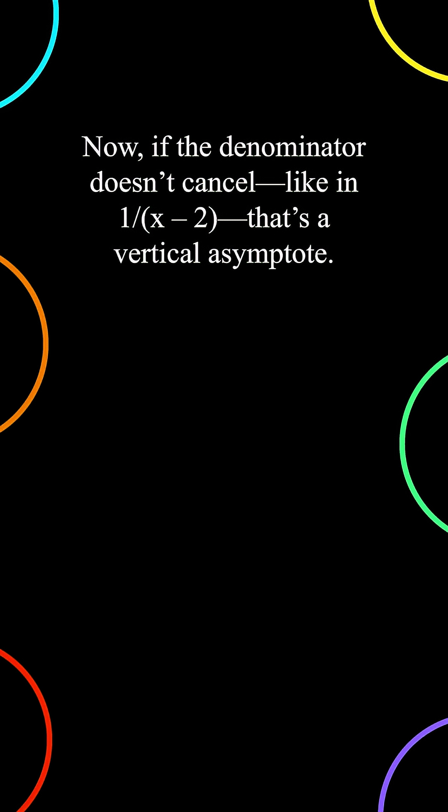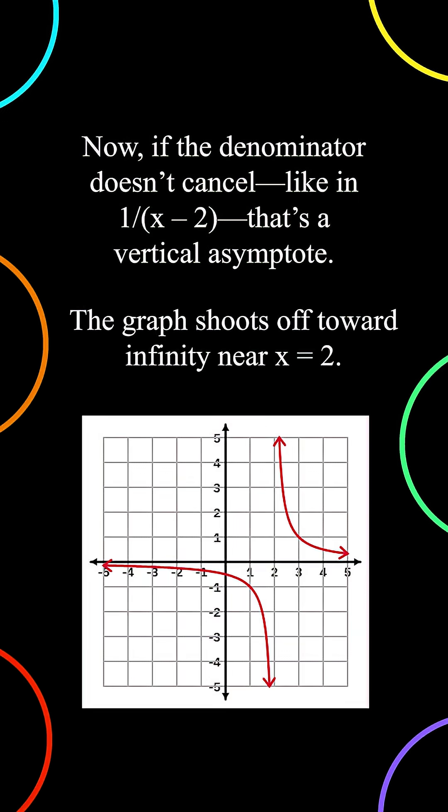Now, if the denominator doesn't cancel, like in 1/(x - 2), that's a vertical asymptote. The graph shoots off toward infinity near x = 2.